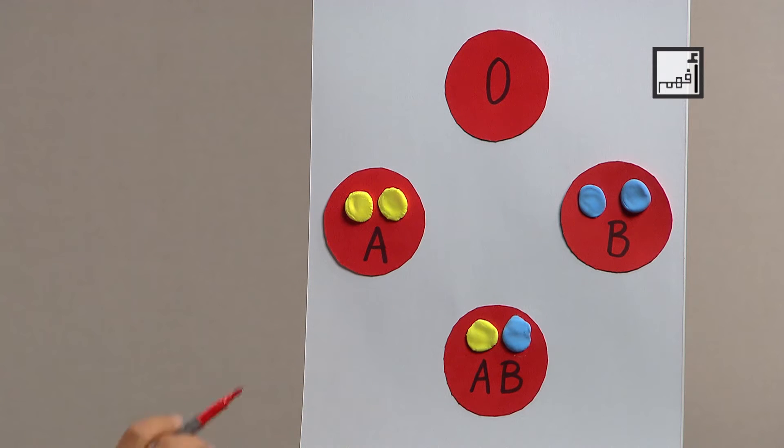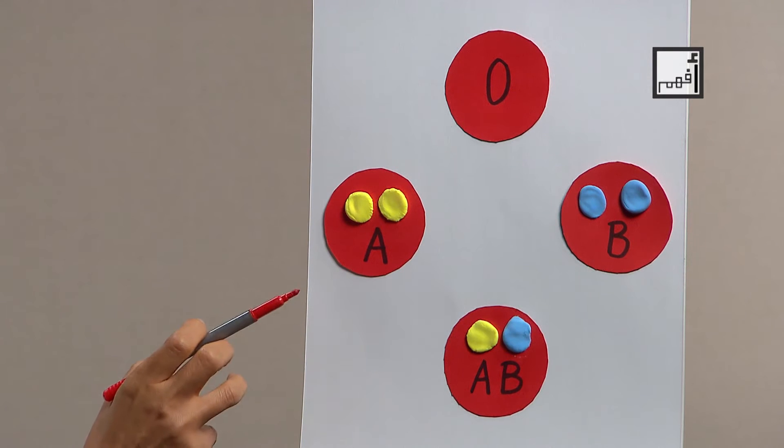The importance of blood groups is vital during operations and blood transfusion. We must know your group to know from whom you can receive blood or to whom you can donate blood. Our body reacts against foreign proteins.